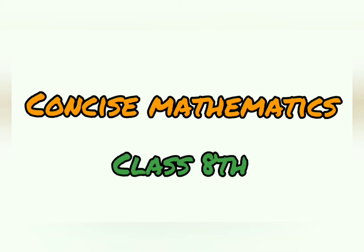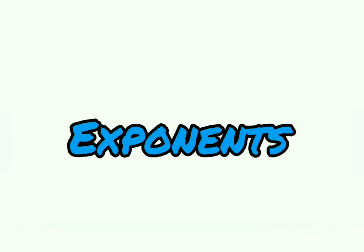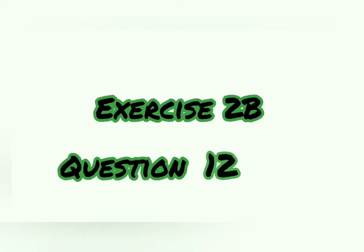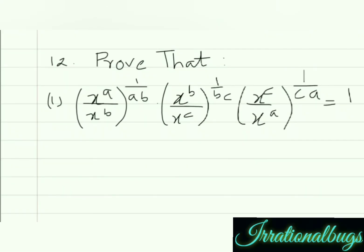Hello students, we are continuing Concise Mathematics, Class 8, Chapter 2, Exponents, Exercise 2B, Question 12. Question number 12 is: x raised to the power a upon x raised to the power b, whole raised to the power 1 by ab, multiplied by x raised to the power b upon x raised to the power c, whole raised to the power 1 upon bc, multiplied by x raised to the power c upon x raised to the power a, whole raised to the power 1 upon ca, is equal to 1.